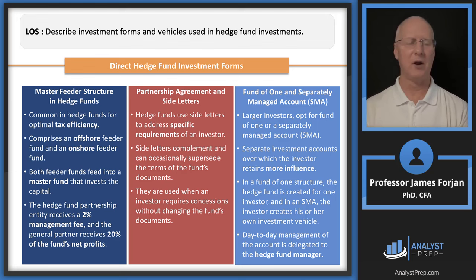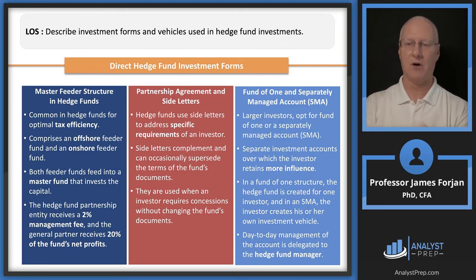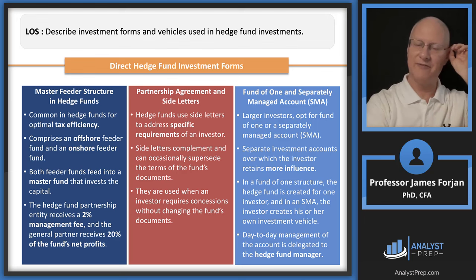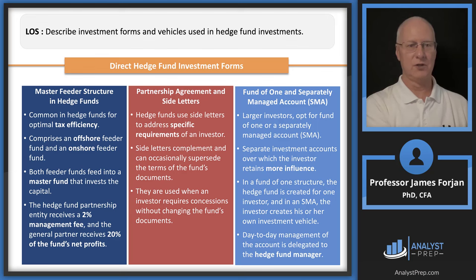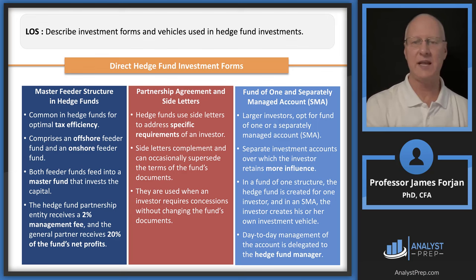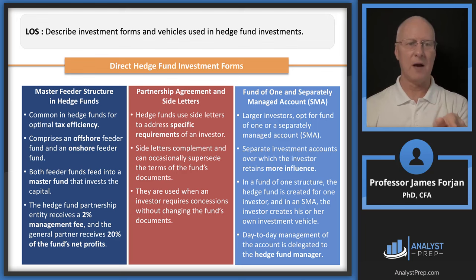There's a feeder fund structure: Jim's hedge fund might be open only to investors from Spain, and that capital feeds into a larger master fund — perhaps located offshore. Other countries then feed into that master fund. Typically this involves a 2% management fee and a 20% performance fee. One good exam topic: tax efficiency and partnership agreements. Side letters allow new investors from a different country to negotiate a different contract — for example, not preferring the original investors over them.